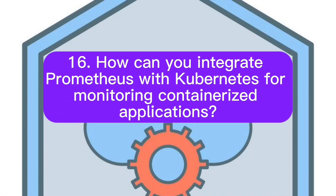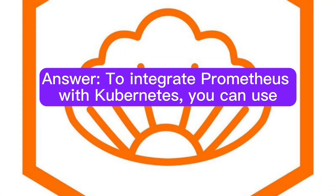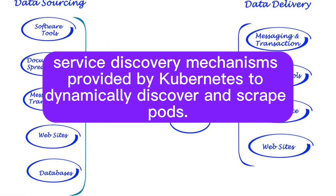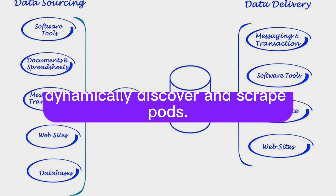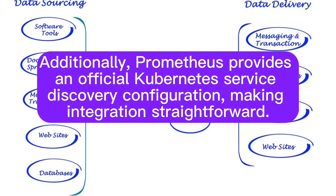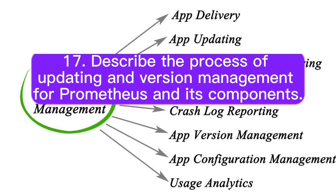How can you integrate Prometheus with Kubernetes for monitoring containerized applications? You can use service discovery mechanisms provided by Prometheus to dynamically discover and scrape pods. Additionally, Prometheus provides an official Kubernetes service discovery configuration, making integration straightforward.